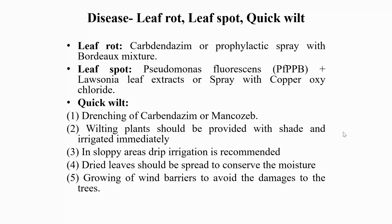Wilting plants should be provided with shade and irrigated immediately. In sloppy areas, drip irrigation is recommended and dried leaves should be spread to conserve moisture. Growing wind barriers helps avoid damage to the trees. These are the control measures for diseases like leaf spot and quick wilt in this plant.